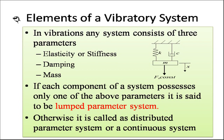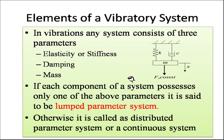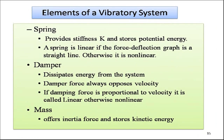Now we'll see the basic elements of a vibrating system. Any vibrating system can be expressed in terms of three parameters: elasticity or stiffness (k), damping (c), and mass (m). If each component possesses only one of these parameters, it is a lumped parameter system; otherwise, it is a distributed parameter or continuous system. The first element is the spring, which provides stiffness k and is a potential energy storing device.